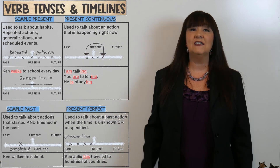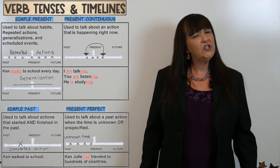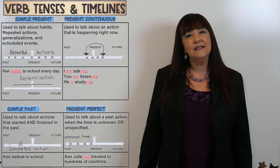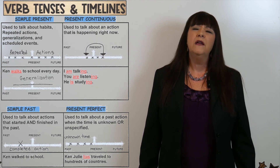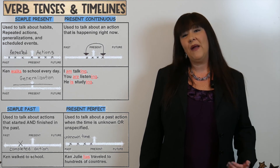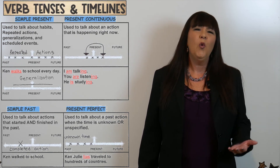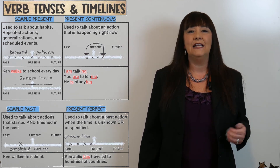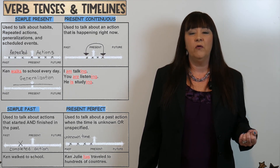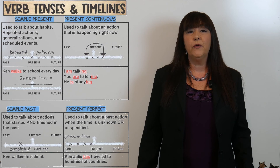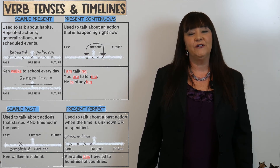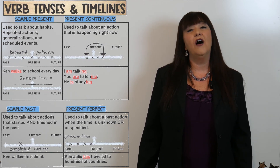And then the last tense, which sometimes can be a bit tricky, is called the present perfect. The present perfect is used to talk about a past action when we don't know exactly when it happened, so the time is unknown. For example, "Julie has traveled to hundreds of countries."